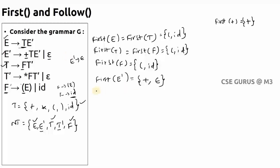Similarly, for First(T-dash): locate T-dash on the left-hand side. The leftmost symbol of one production is star, which is a terminal. The other production is T-dash → epsilon, so epsilon is also included. Therefore First(T-dash) = { *, ε }. That's how simply you find the First set for any non-terminal.